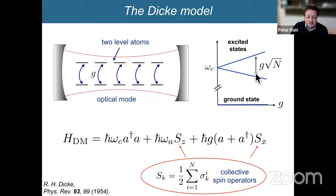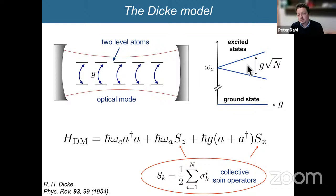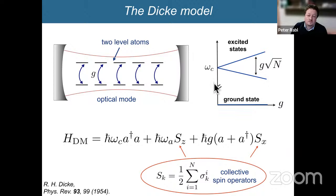In typical optical or microwave systems, this Rabi splitting can be quite large but is always much smaller than the absolute optical frequency. We always work in a regime where the ground state is unaffected and the excited state is split only slightly. But since the splitting scales as √N, one can ask: what happens if I put more and more atoms in, or make the cavity coupling stronger by reducing the mode volume and increasing G? What happens when this splitting comes on the order of the cavity frequency itself?